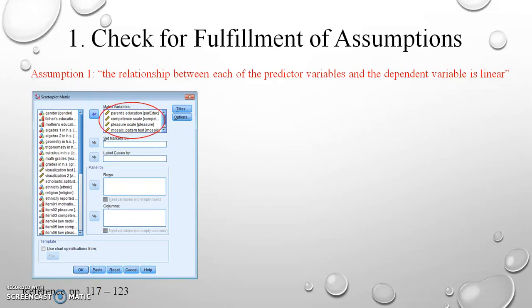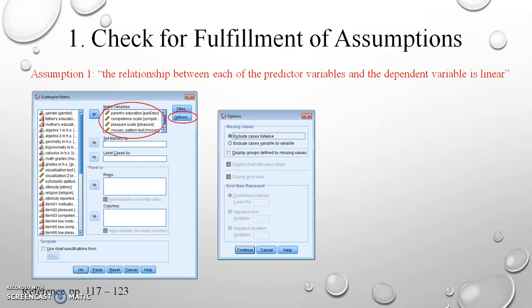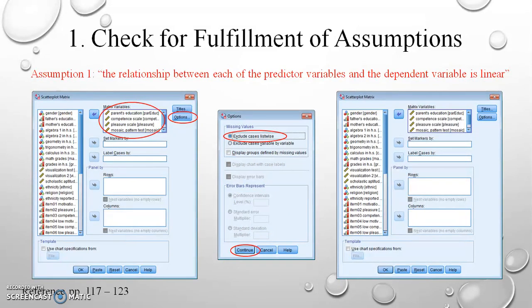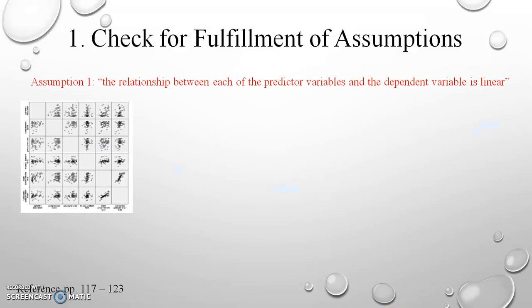I moved parents' education, competence scale, pleasure scale, the mosaic pattern test, math achievement, and scholastic aptitude test into the matrix box. Then I click on the Options button; the options dialog box appears. I select Exclude Cases Listwise, then click Continue. Back at the scatter plot matrix box, I click OK. A scatter plot matrix is now generated in your output file.